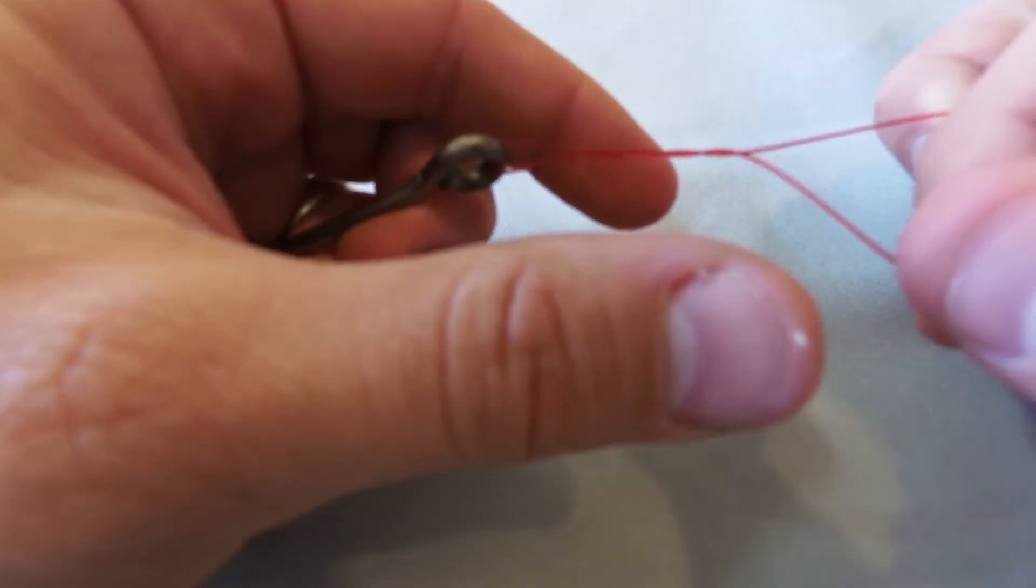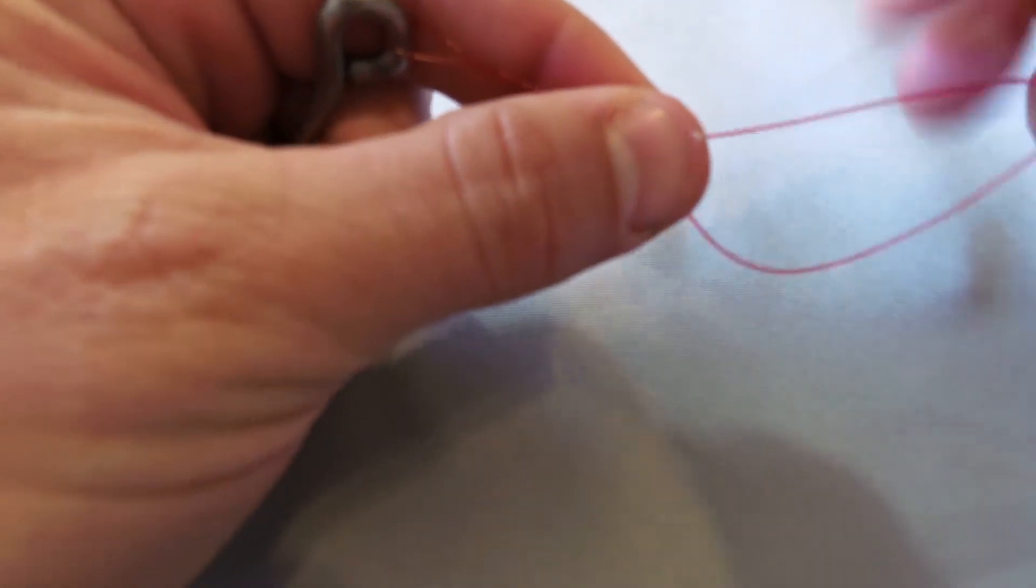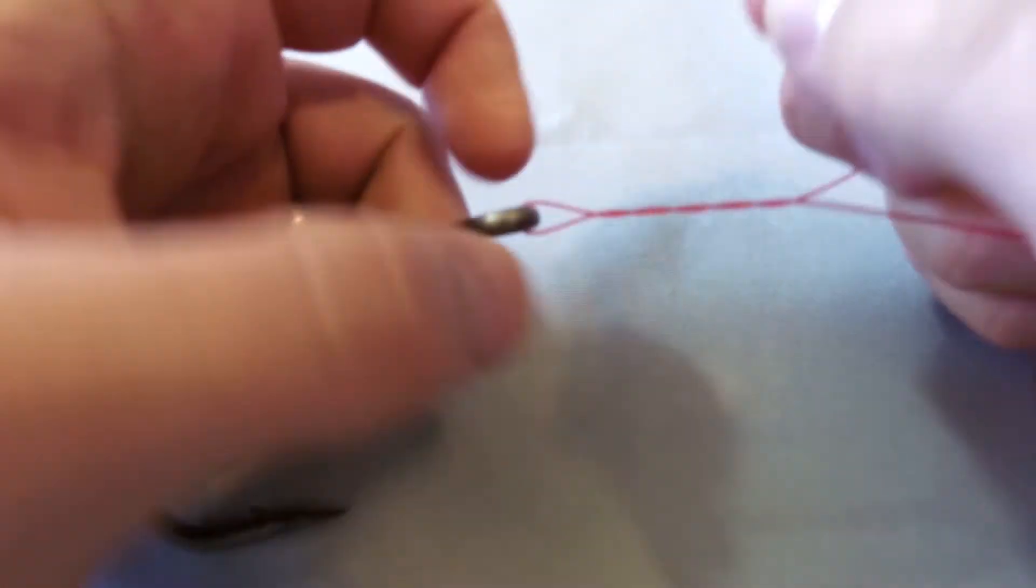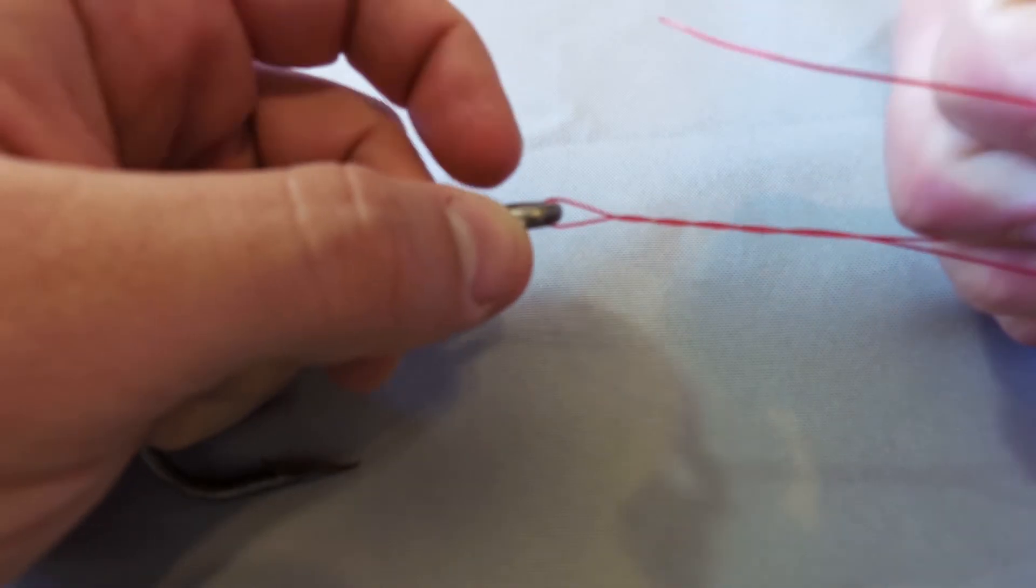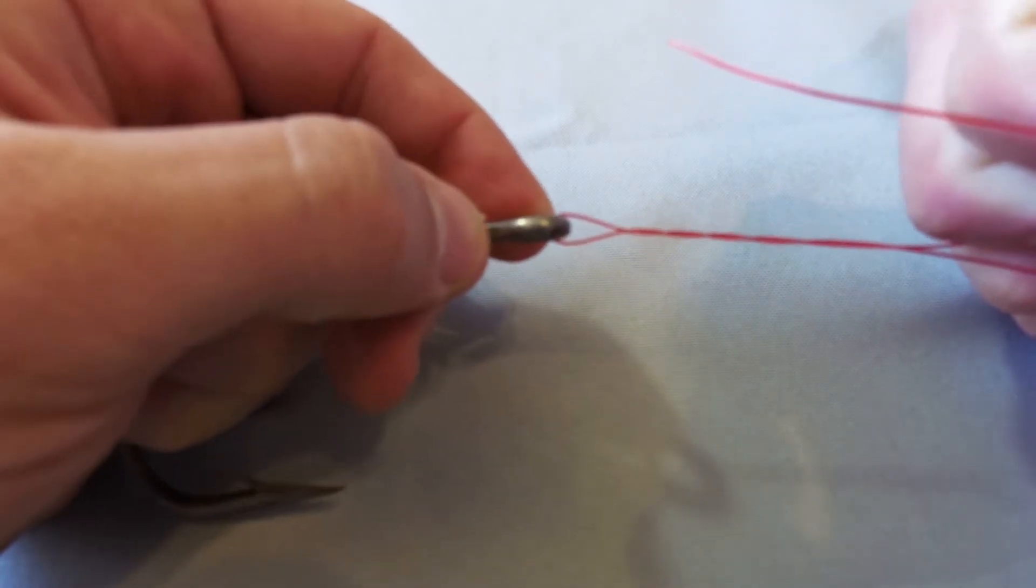Anywhere from six to eight twists around that, and then you're going to take that tag end and you're going to feed it through that loop that's just formed above the eye of the hook.